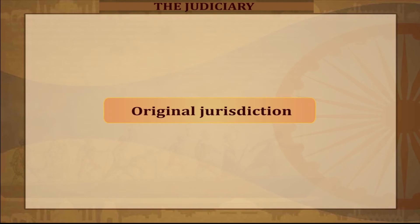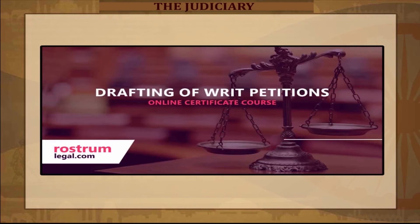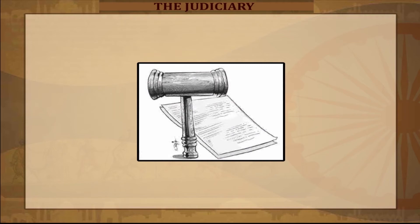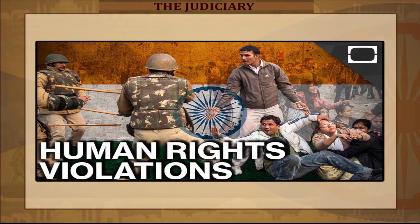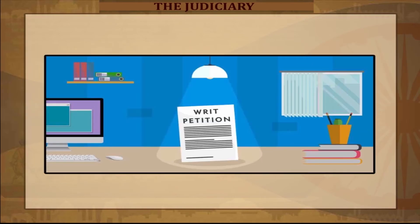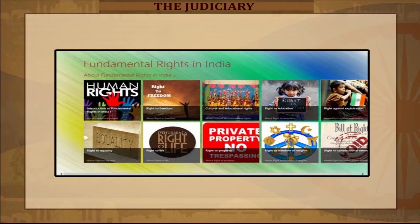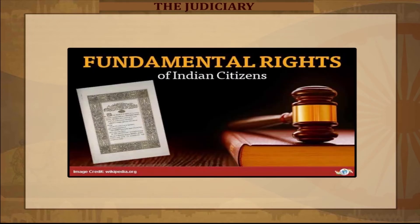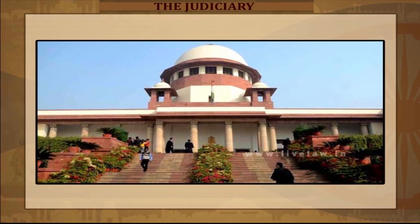Original Jurisdiction: The Supreme Court takes writ petitions directly in cases of constitutional violation, serious human rights violation, or any petition filed under the right of constitutional remedies, fundamental rights violation, or if a case involves a serious issue that needs immediate resolution. Also, disputes between two states, or a state or individual and the union government, are decided directly by the Supreme Court.